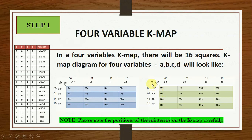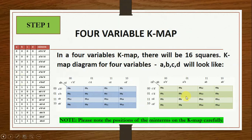If you draw the KMAP with CD on one axis and AB on the other, the minterm placement is M0, M1, M2, M3, M4, M5, M6, M7, M8, M9, M10, M11, M12, M13, M14, M15 in the corresponding positions. Please look at the position of the minterms carefully — if you don't place them properly and correctly, your KMAP will go wrong.